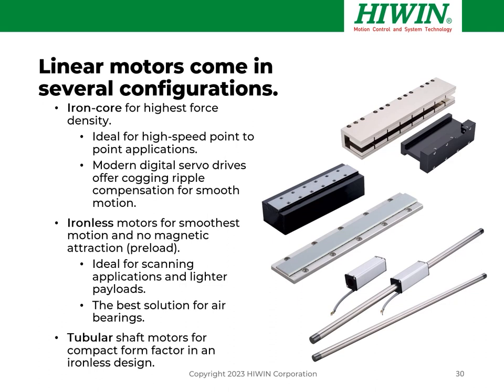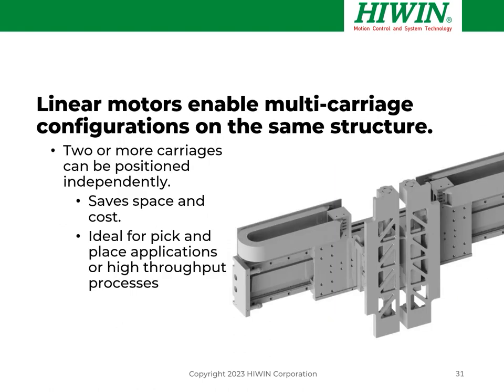Another type is the tubular shaft motor — a unique form factor sometimes suitable in designs, and typically ironless. You can move either the shaft or the moving coil. Linear motors enable multiple carriages on the same structure, a unique characteristic. Two or more carriages can share the same base and be positioned completely independently, saving space and cost. They share a work envelope, so you must be careful not to program them to crash into one another. Absolute encoders help here because they always know their position, making it easy to manage anti-crash logic. These are ideal for pick-and-place applications or high-throughput processes.